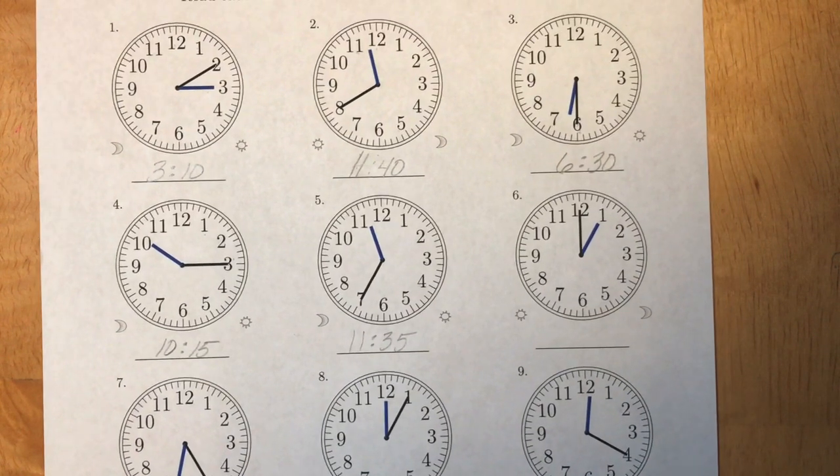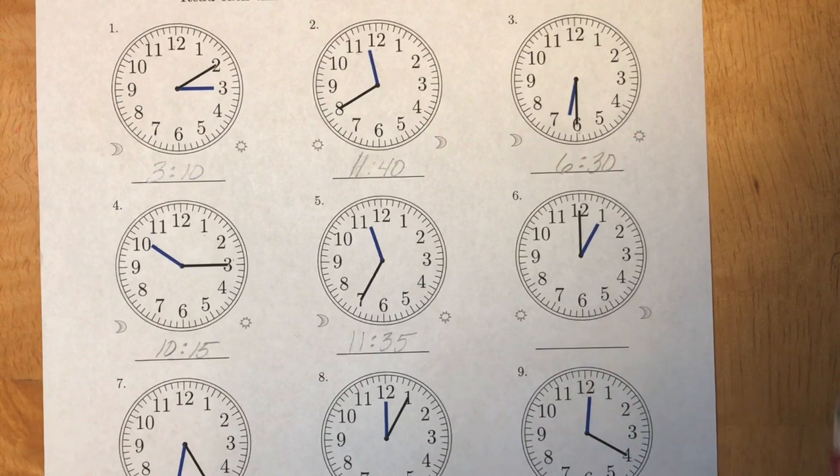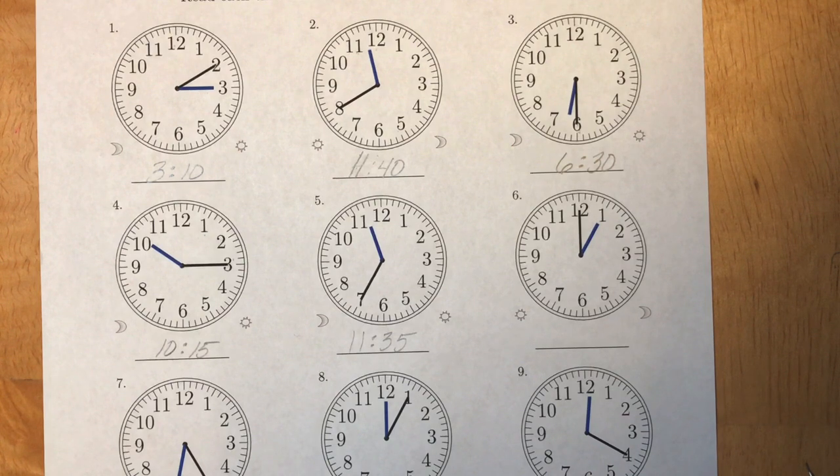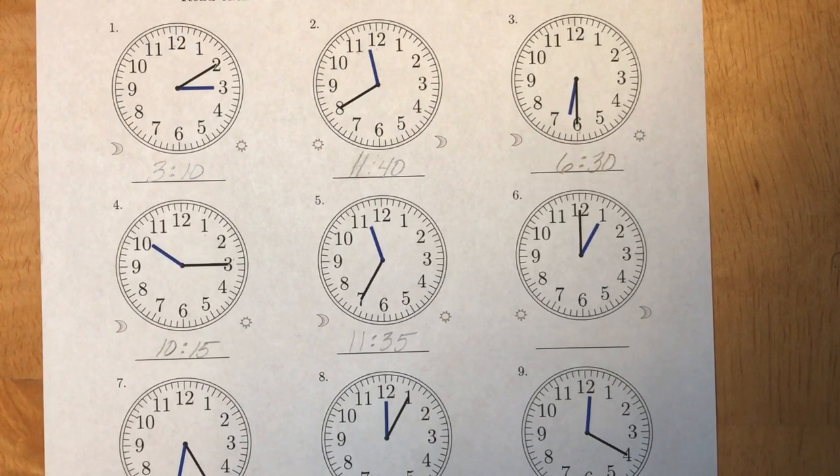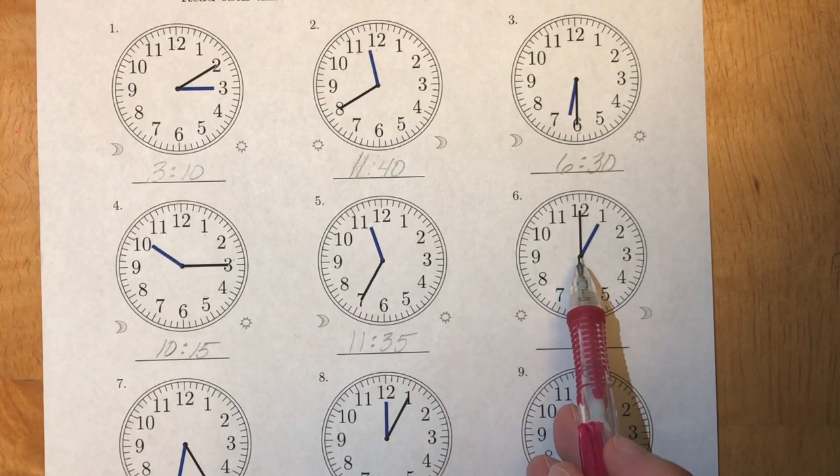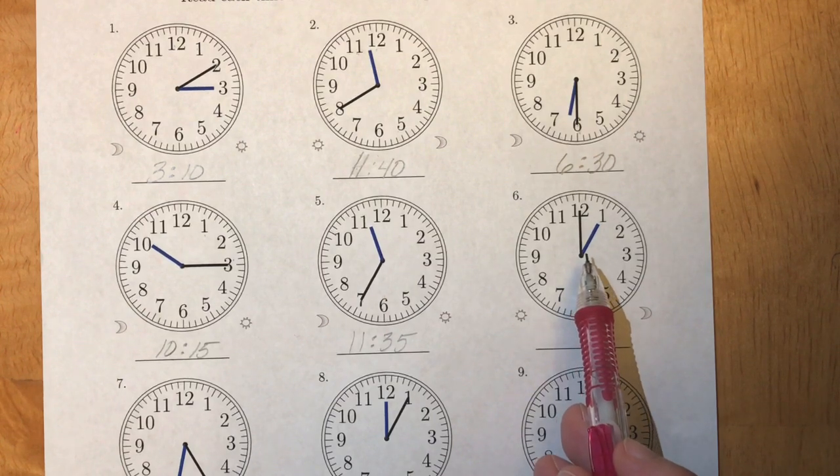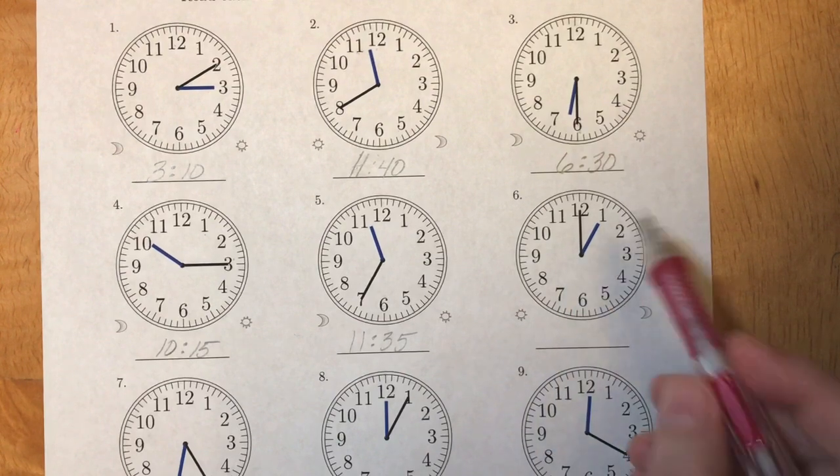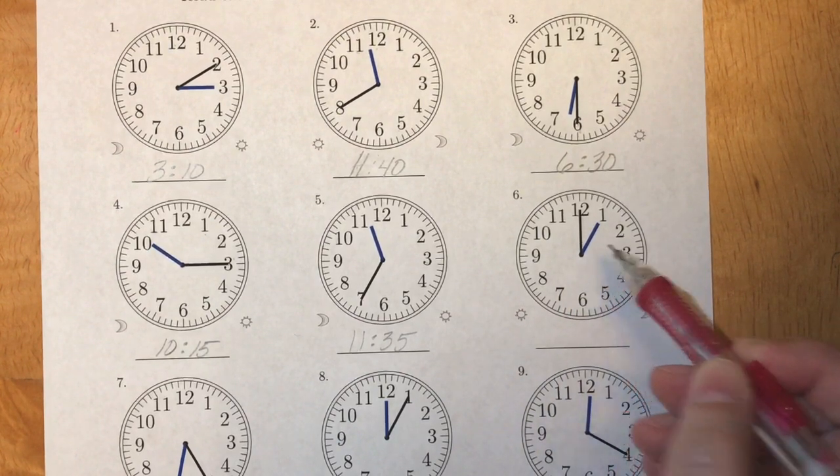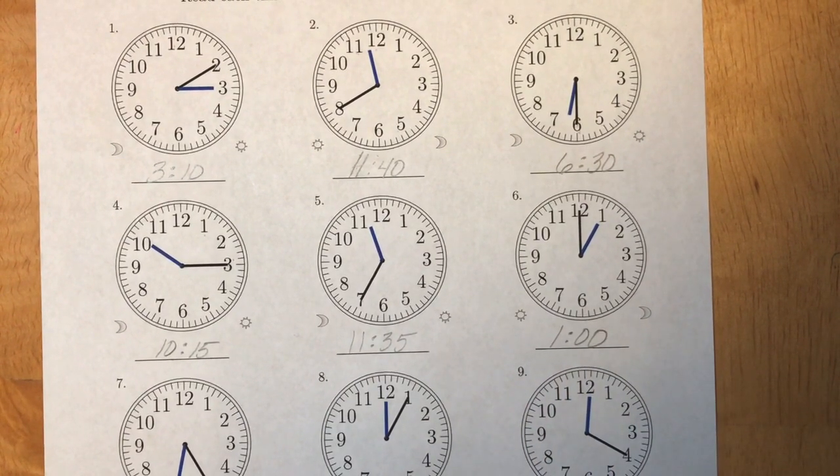Let's take a look at clock number six. Why don't you give this one a try? Alright, let's see how you did. Now in this case, the minute hand is straight up at the twelve, which means that the minutes are zero. We haven't started the hour yet. Our hour hand is pointing to the one. So the time on this clock is right at one o'clock.